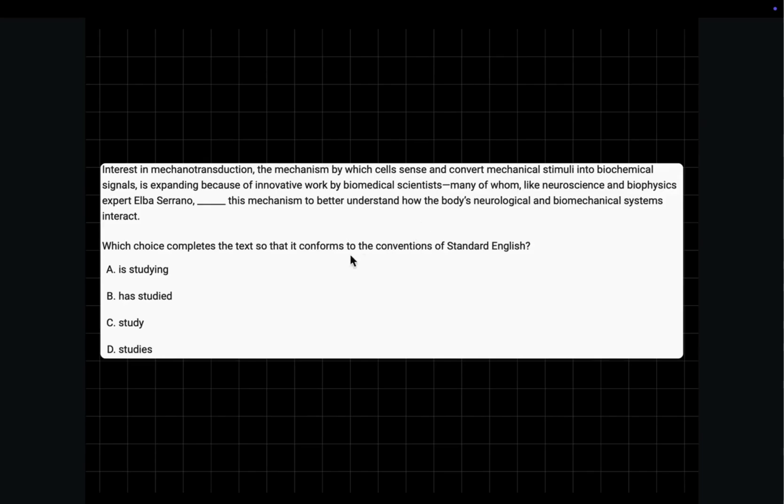How? Well, for these verb tense questions where it asks for the choice that conforms to the conventions of standard English and has multiple choices with the same verbs but different tenses, somewhere in the past, present, and future, you always have to check if you can identify if the multiple choice is singular or plural. And the way you can do that is to use the they-it test. Let me show you what I mean.